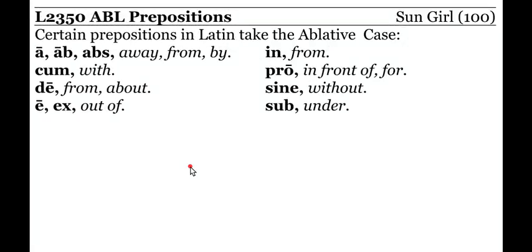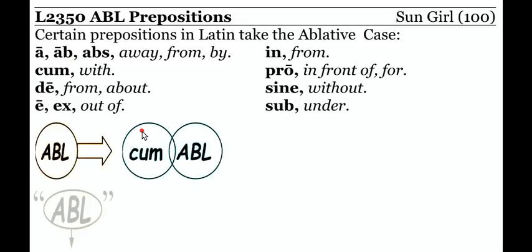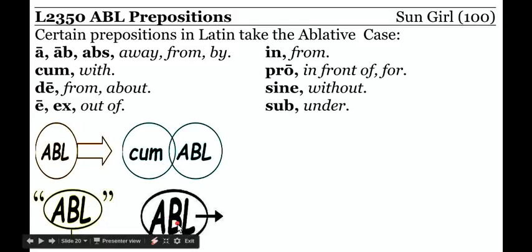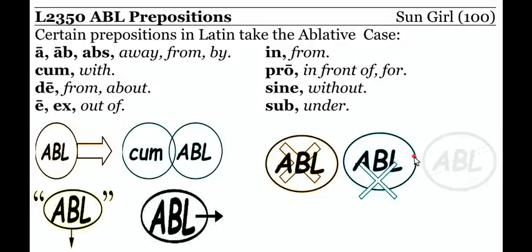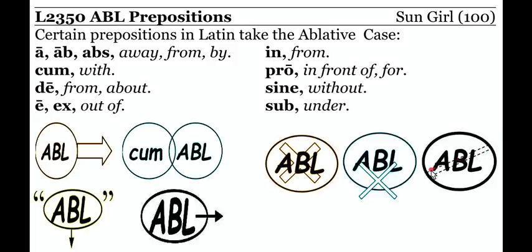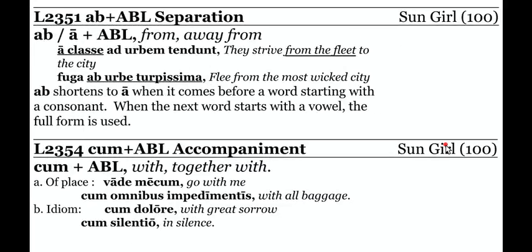Now let's work with ablative prepositions — there aren't many. Ab or a plus the ablative — away from, a separation phrase; de plus the ablative — usually about, but it can mean down from, like de monte, down from the mountain; ex plus the ablative — the opposite of in plus accusative, a source phrase meaning out of; in plus the ablative — with static verbs, a place phrase; pro plus the ablative — in front of or on behalf of; sine plus the ablative — the opposite of cum, meaning without; and sub plus the ablative — under.